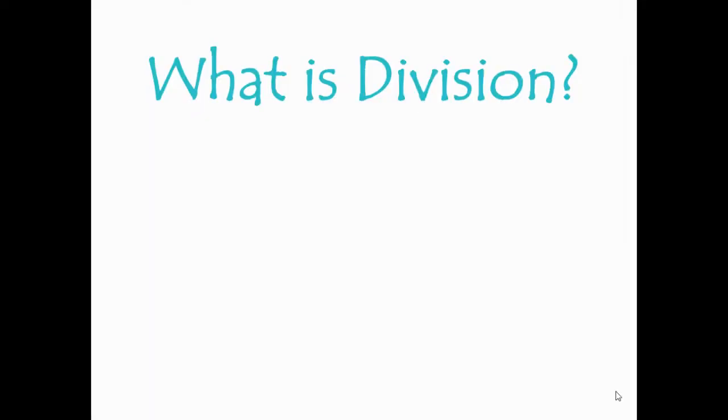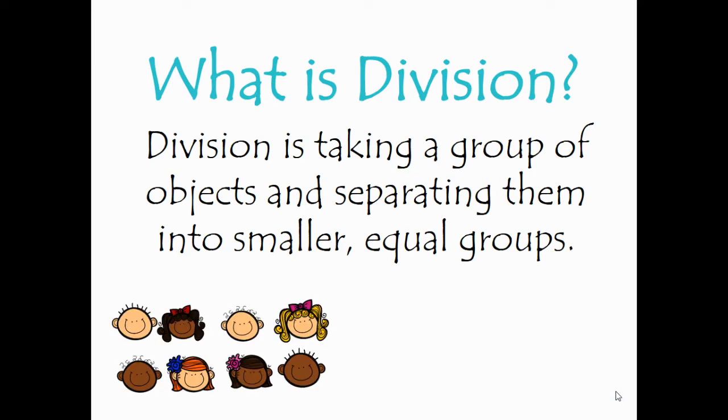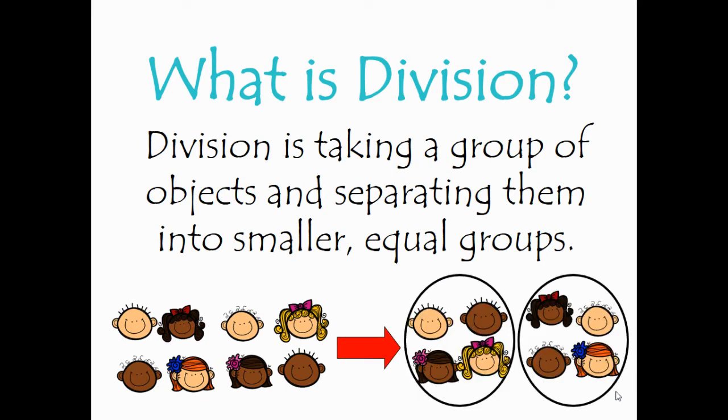Let's talk about what division actually is. Division is taking a group of objects and separating them into smaller equal groups. For example, I have a group of eight children here. If I want to divide these children up, I can think about separating them into equal groups. Here I have divided the children into two equal groups of four children.